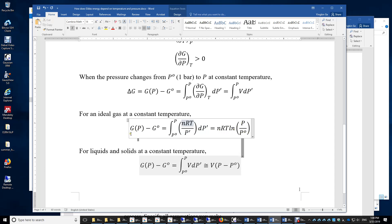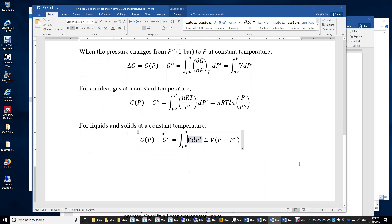For liquids and solids at a constant temperature, again, the temperature is constant, therefore delta G is simply the integral of VdP. And for solids and liquids, volume does not change significantly with pressure. So approximately the volume of a liquid or solid is a constant here. Therefore, the change of Gibbs energy is the volume times the final pressure minus the initial one bar pressure.